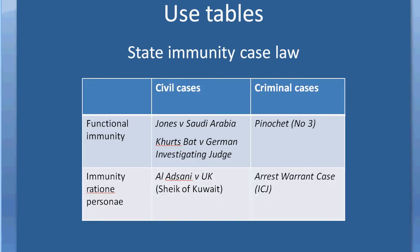The other possibility is using tables to convey complex information. For example, when I teach state immunity — the immunity of foreign states before national courts — one can think about the case law as covering both civil and criminal cases, and there are two different types of immunity: immunity attaching to sovereign functions (acts of a government character), and so-called immunity rationae personae, or immunity that attaches to people who hold particular offices like the head of state or the minister of foreign affairs. One way of simplifying a confusing mass of case law is to present information in a table.